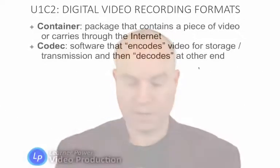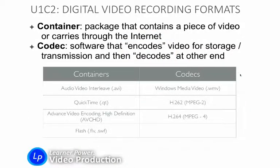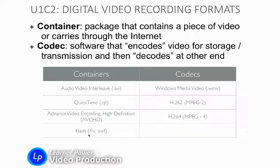Here is a little chart to help you. Containers include the AVI interface — Audio Video Interleave — that's .avi files. QuickTime files have the container extension .qt. Advanced Video Coding High Definition, or AVCHD, is another very popular container today. The Flash container has been around for a long time but may be going out of fashion — you'll see those videos as .flv or .swf. Those are four different containers used to carry video.